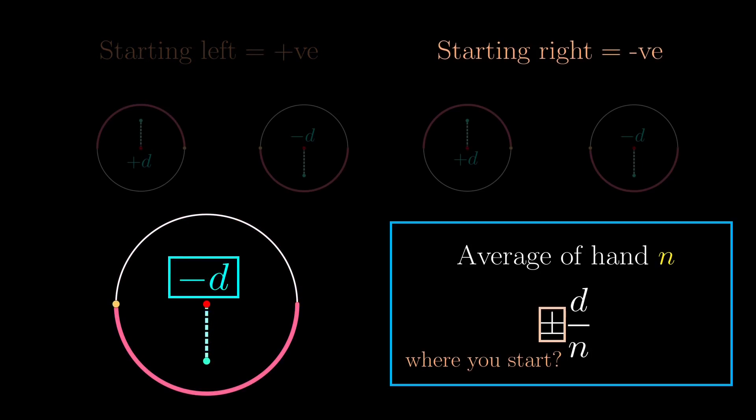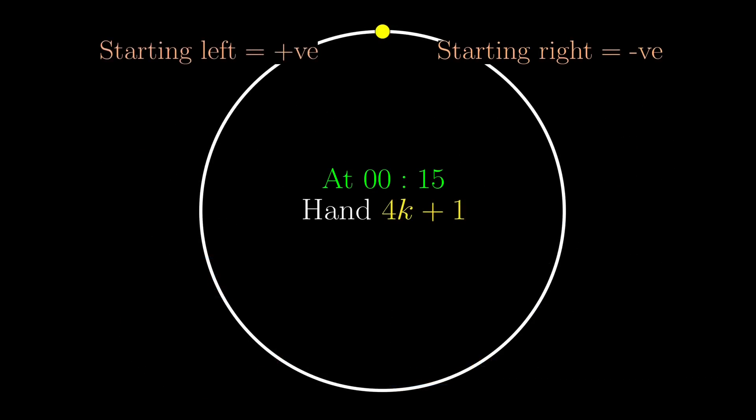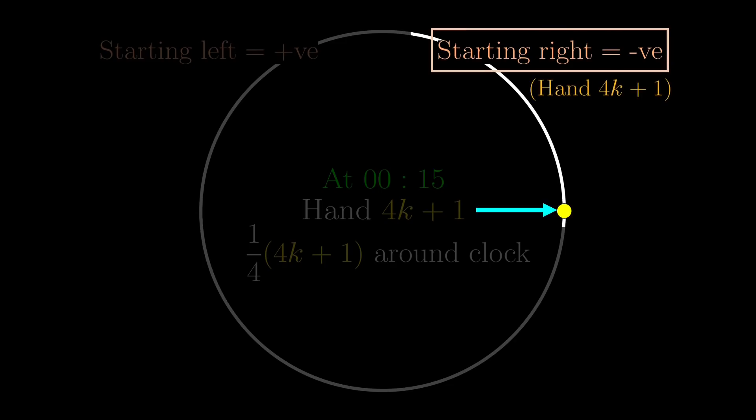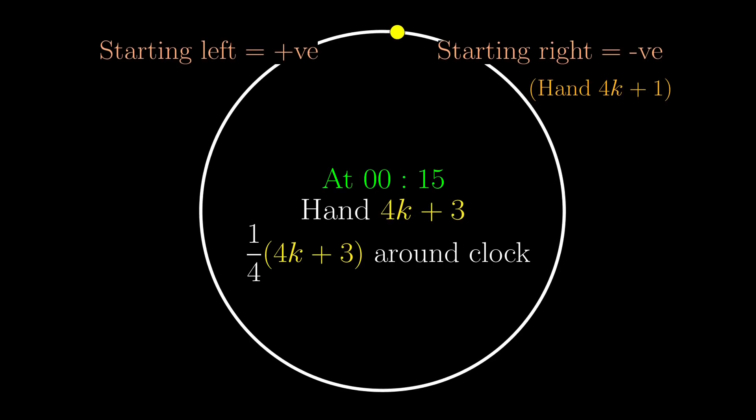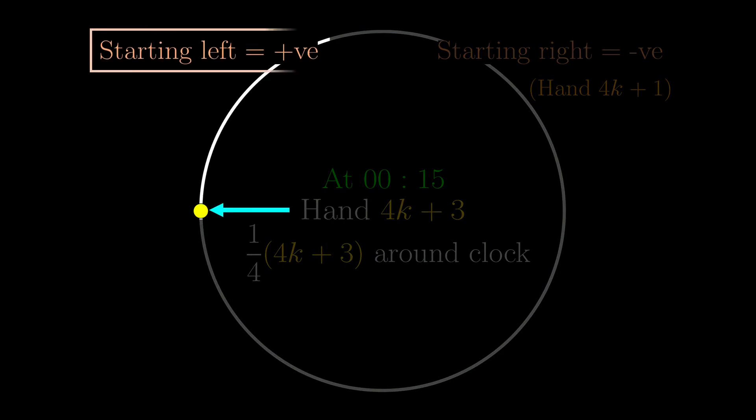Alright, so in general, for hand 4k plus 1, at quarter past, it should have gone 4k plus 1 quarters around the clock, which means k full revolutions and an extra quarter. So at quarter past, the hand is on the right, and so this hand will contribute negatively to the sum. As for hand 4k plus 3, similarly, at quarter past, it has gone through 4k plus 3 quarters of the clock, which means k full revolutions and 3 extra quarters, i.e. starting on the left side, and this means it contributes positively to the sum.